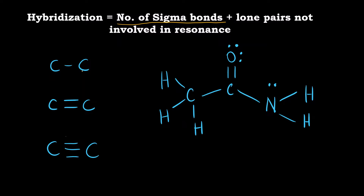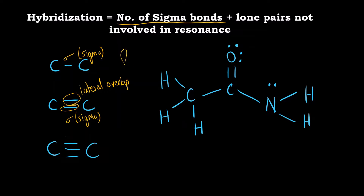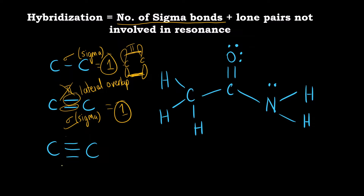Whenever a carbon-carbon single bond is formed, that bond is called a sigma bond. In a carbon-carbon double bond, the first bond formed is the sigma bond, and the second bond — formed by lateral overlap of p orbitals — is the pi bond. In a carbon-carbon triple bond (as in alkynes), the first bond is sigma and the remaining two are pi bonds. So in single, double, or triple bonds, there is always only one sigma bond.